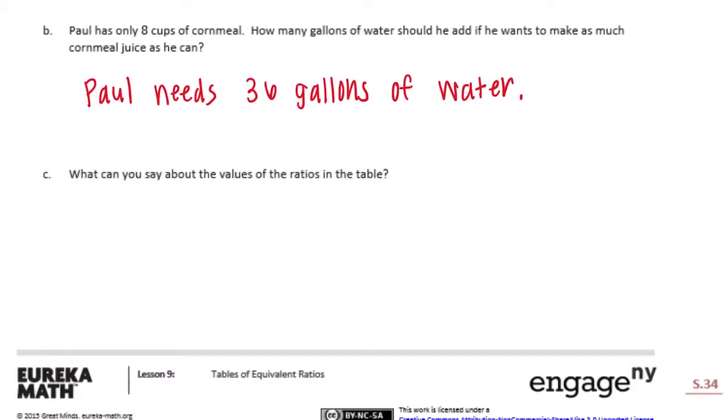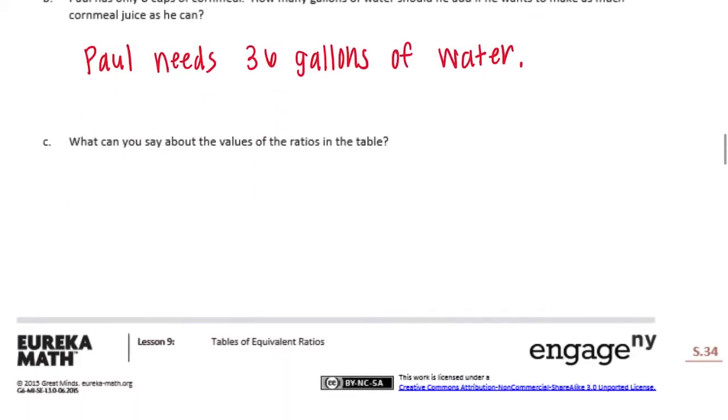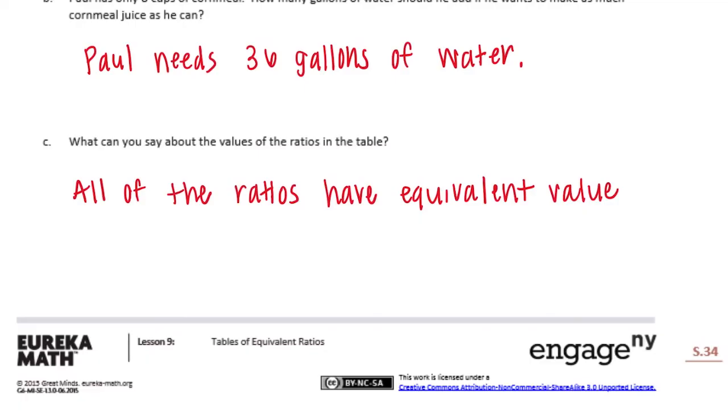And C, what can you say about the value of the ratios in the table? So remember in the last lesson we were learning about the value of the ratios? And it's basically just taking all of the ratios and putting them in simplest form. So for all of these the value of the ratio is 2 to 9. All of them have the same value because they are all equivalent ratios. So we can say all of the ratios have equivalent values. We have equivalent value and we can just say that that's 2 to 9.